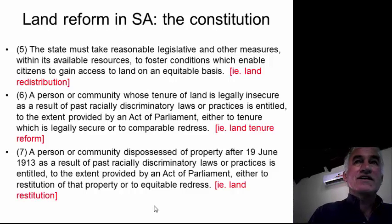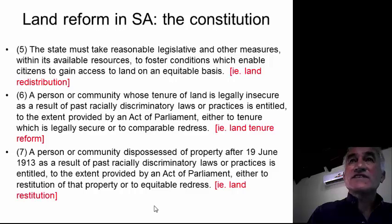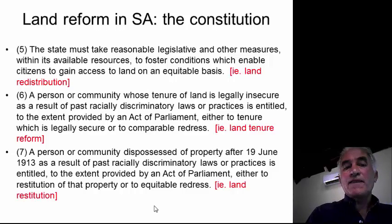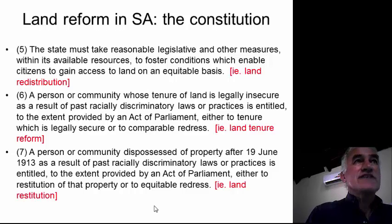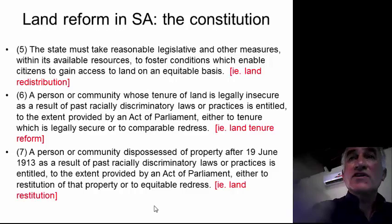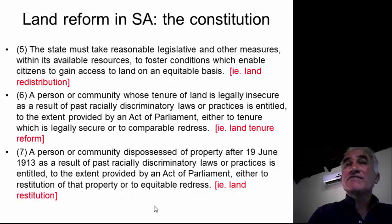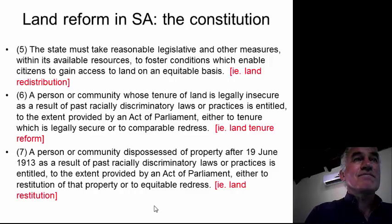Both sections 25.6 and 25.7 require an act of parliament to be passed. The Restitution Act was passed in 1994. Regarding Section 25.6 security of tenure, we have the Extension of Security of Tenure Act providing some security for people living on farms belonging to others, the Labour Tenants Act, and EPILRA — the Interim Protection of Informal Land Rights Act. However, we don't really have a proper law guaranteeing security of communal tenure in areas where custom still informs how people hold land together. That act of parliament in respect of communal tenure is still missing, and government could be taken to court for failing to provide it.